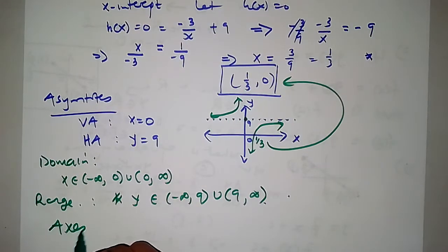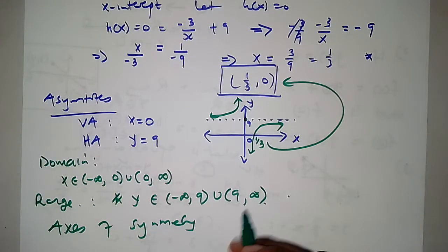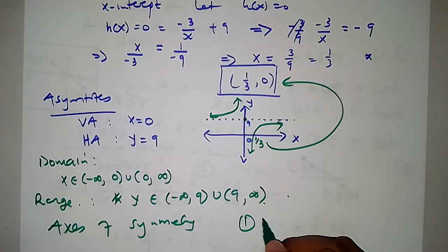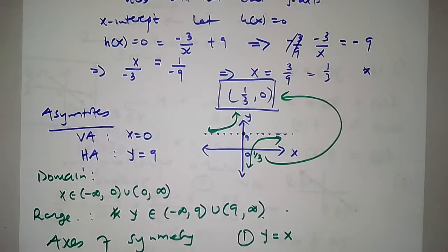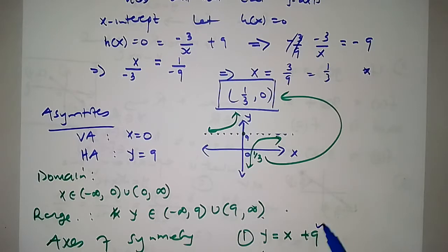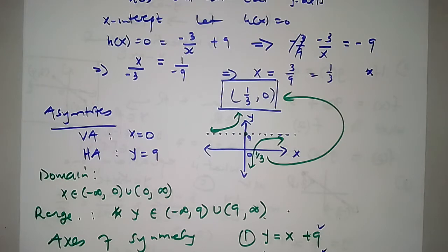For the axes of symmetry, there are two. The first is y equals negative x plus 9, and the second is y equals x plus 9. We grabbed the 9 from the horizontal asymptote. Be careful in Grade 11 though, because you may have horizontal shifts, so you cannot simply pick the q value directly — there is more to consider.